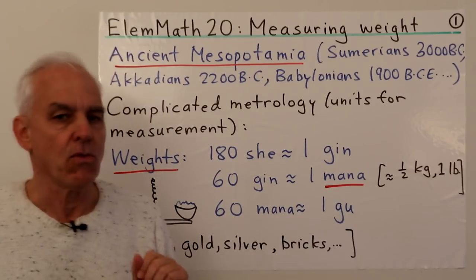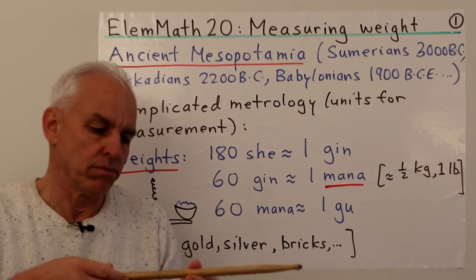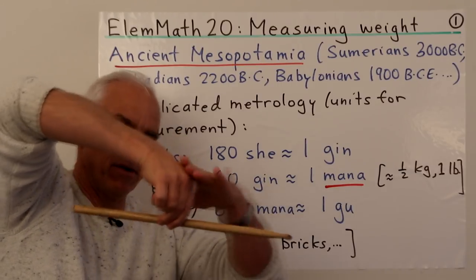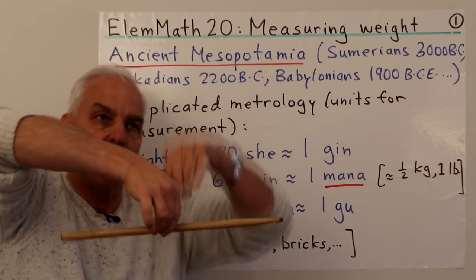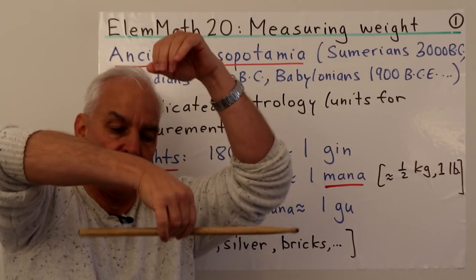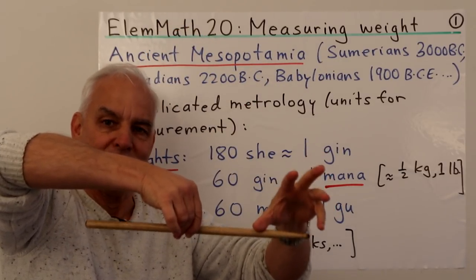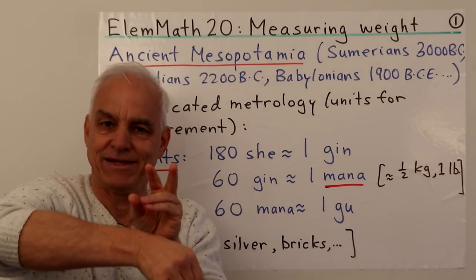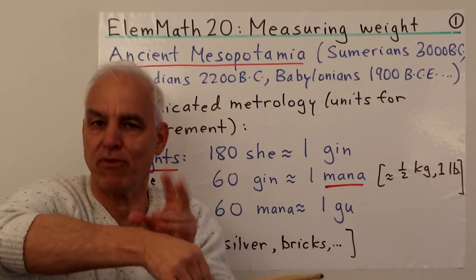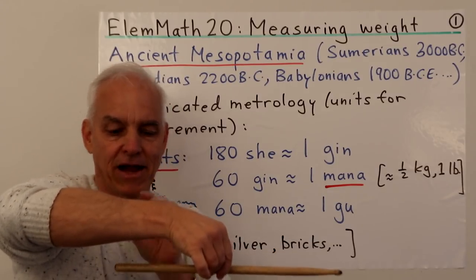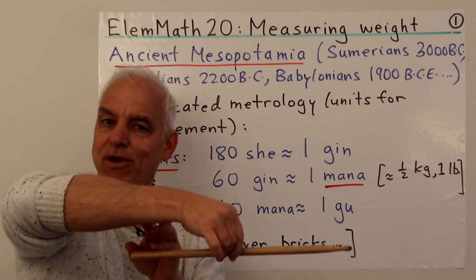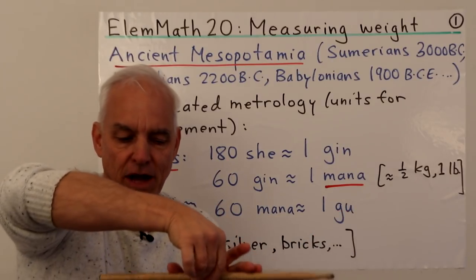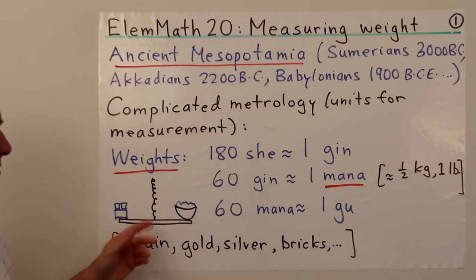Back then, weighing was almost universally done by balancing things. You had some kind of system — two pans connected by a lever, balanced with a rod or chain. You put whatever you're weighing on one side of the balance, and on the other side you put pre-established calibrated weights. When balanced, you read off the calibrated weights on that side — that tells you the weight of the object.